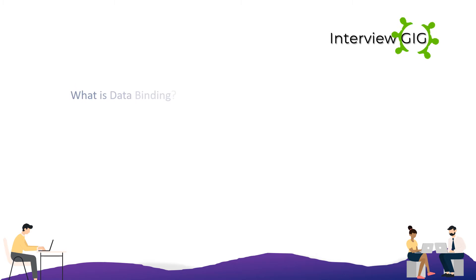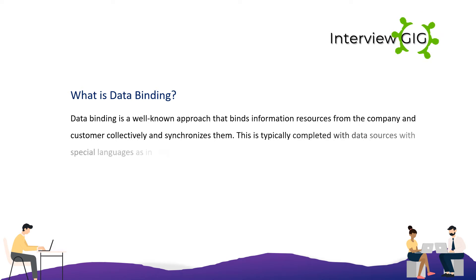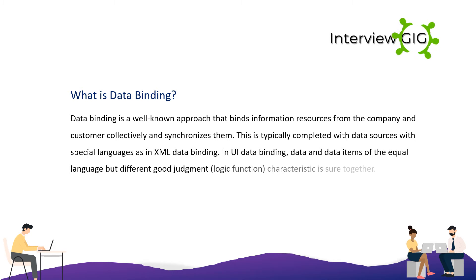What is data binding? Data binding is a well-known approach that binds information sources from the provider and consumer together and synchronizes them. This is typically done with data sources in special languages such as XML. In UI data binding, data and data items of the same language but different logic functions are bound together.